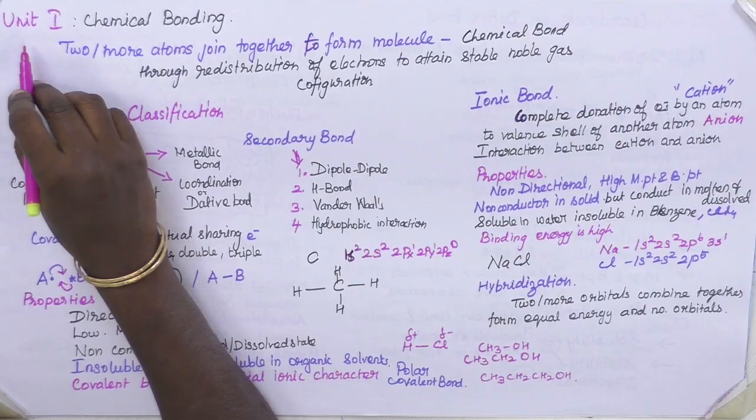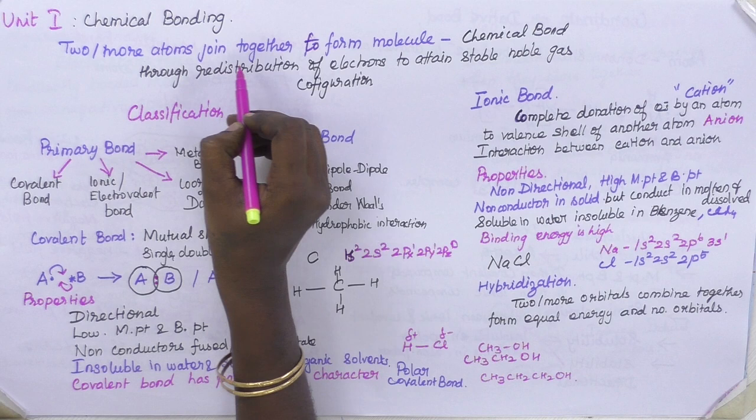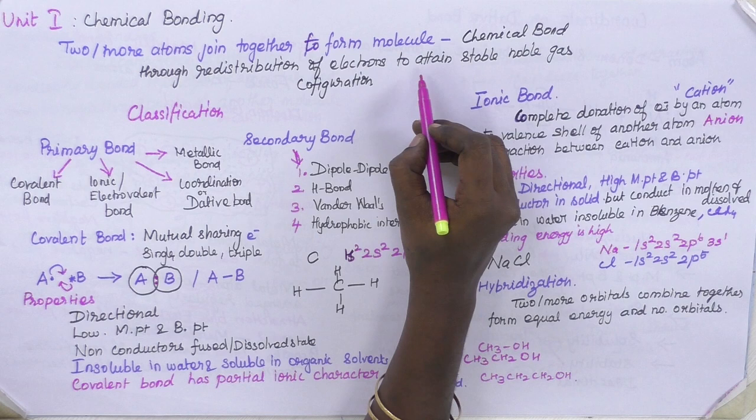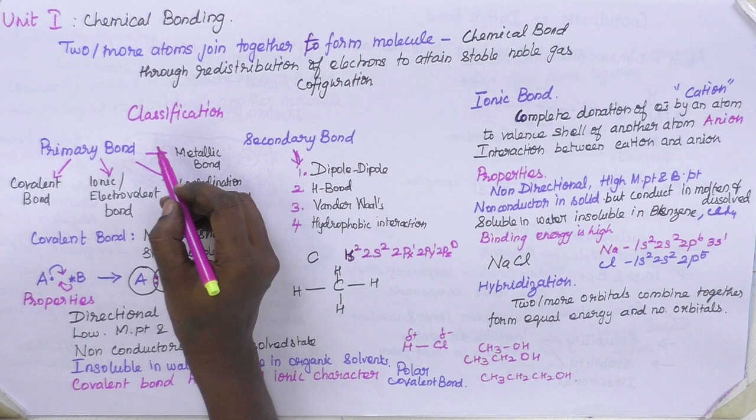Welcome to the session. Today I am going to take the first unit, that is Unit 1: Chemical Bonding. Chemical bonding is nothing but two or more atoms joined together to form a molecule. This happens by the redistribution of electrons to attain stable noble gas configuration. Based on that, we have different varieties of chemical bonding.